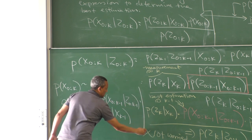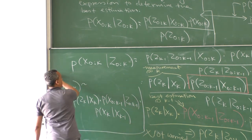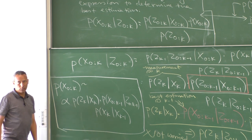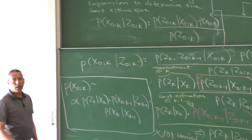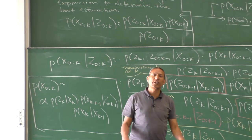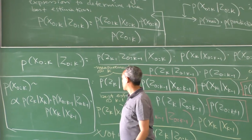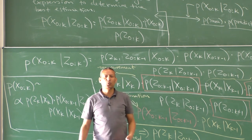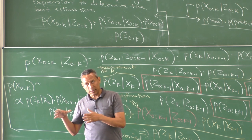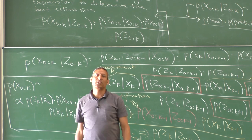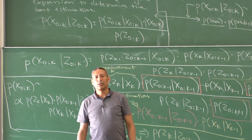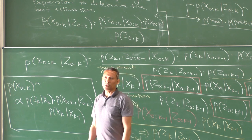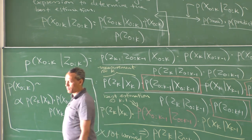This is the expression we use to determine the best position of the robot up to time k. By this we come to the conclusion of today's lecture. Next time we will see that this expression is a continuous probability density function, quite complex to determine. We have to find a mechanism to change the continuous probability density function to a discrete probability space — that is where we come to particle filtering, importance sampling, and sequential importance sampling. Thank you very much.